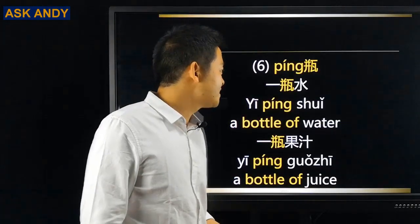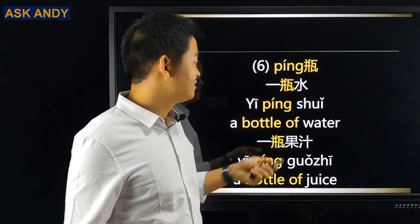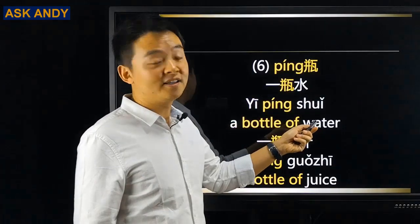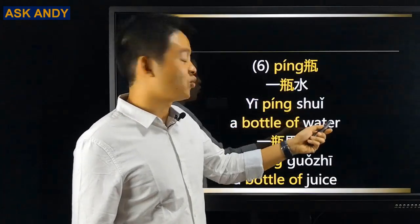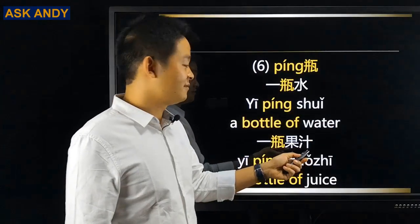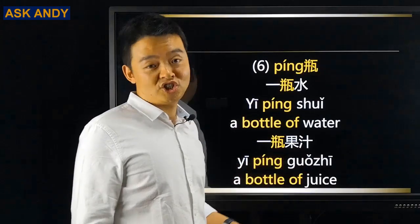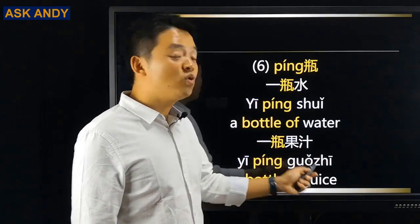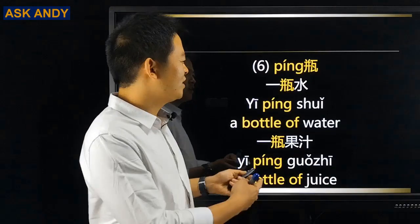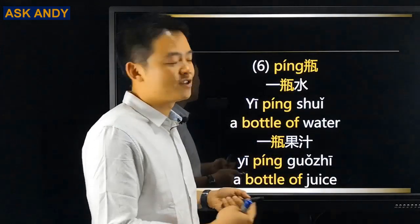Number five: 杯. For example, 一杯茶 — a cup of tea. And 一杯啤酒 — a glass of beer. This is the same as in English, so it will be easy.